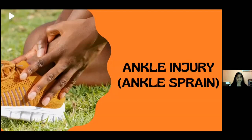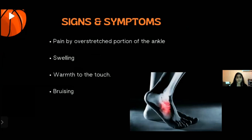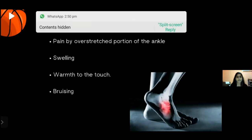Ankle injury is also known as ankle sprain. Ankle sprains are the most common acute injury that develop from sudden blows or twists and are most likely to affect the outside lateral ligaments. This happens when the foot turns under the leg, causing a stretching effect on the ligament to a point where they may rupture. Depending on the amount of ligament tearing, a sprain can be mild, moderate, or severe. The signs and symptoms include pain over the overstretched portion of the ankle, swelling, bruising, and warmth to the touch.